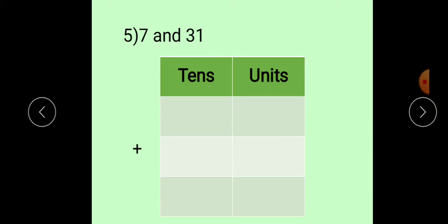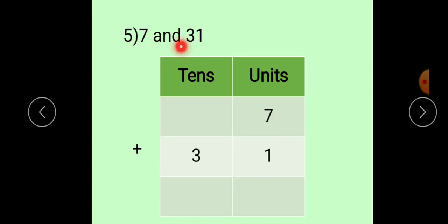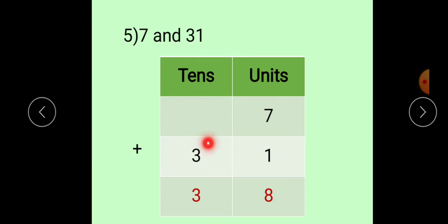See the next example, number 5: 7 and 31. Again, write down the places: tens and units. First number is 7. Only one digit is here, so write this 7 in the units place. Plus, second number is 31: 3 at tens place and 1 at units place. Now, keep 7 in your mind, take out your one finger. 7 plus 1 equals 8. Here again, nothing means 0. 0 plus 3 equals 3. So, your answer will be 38.